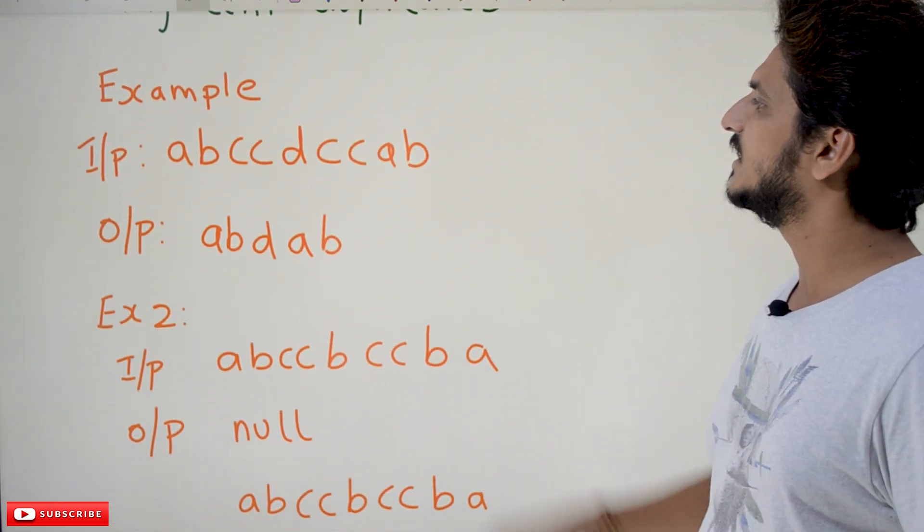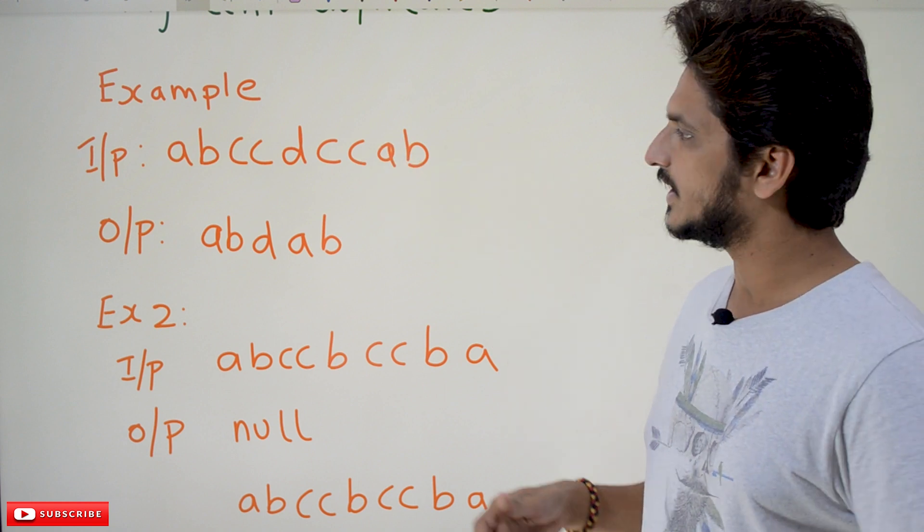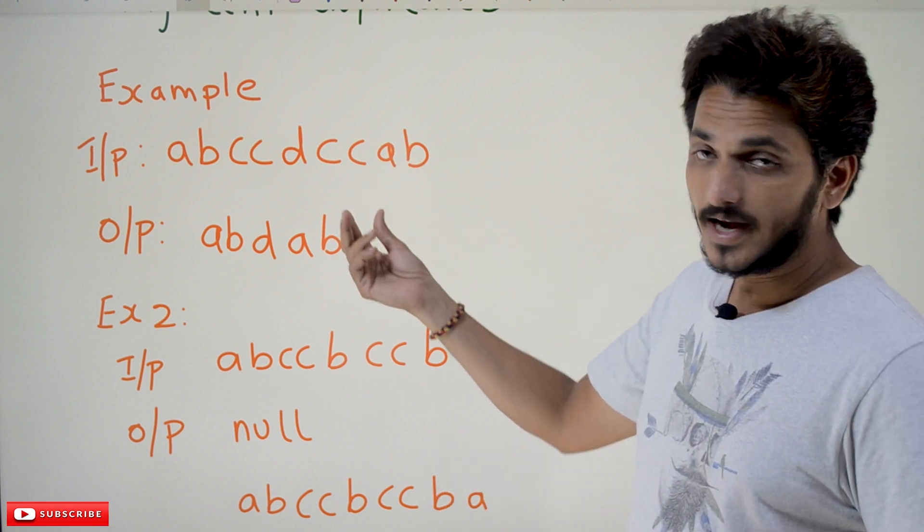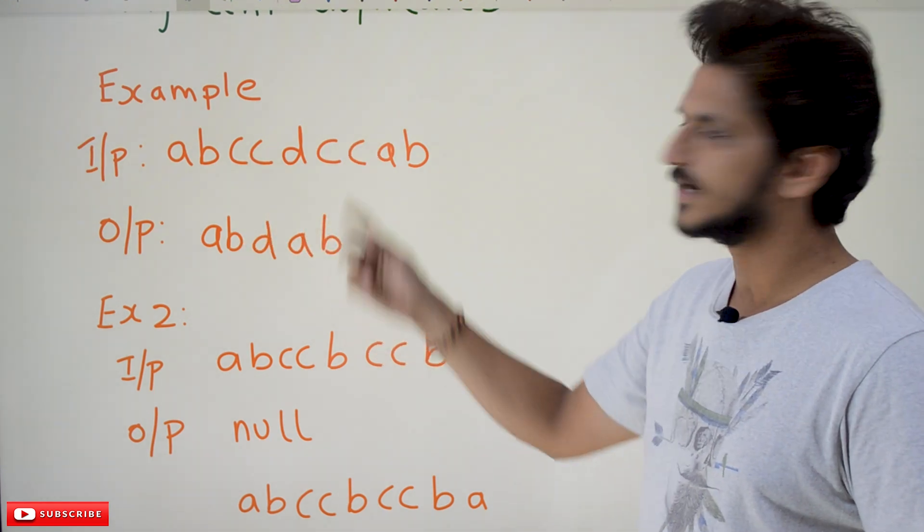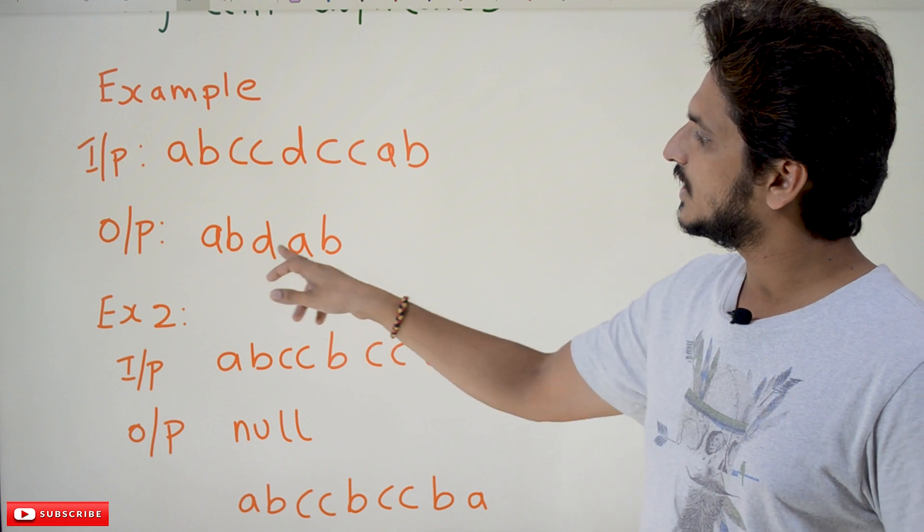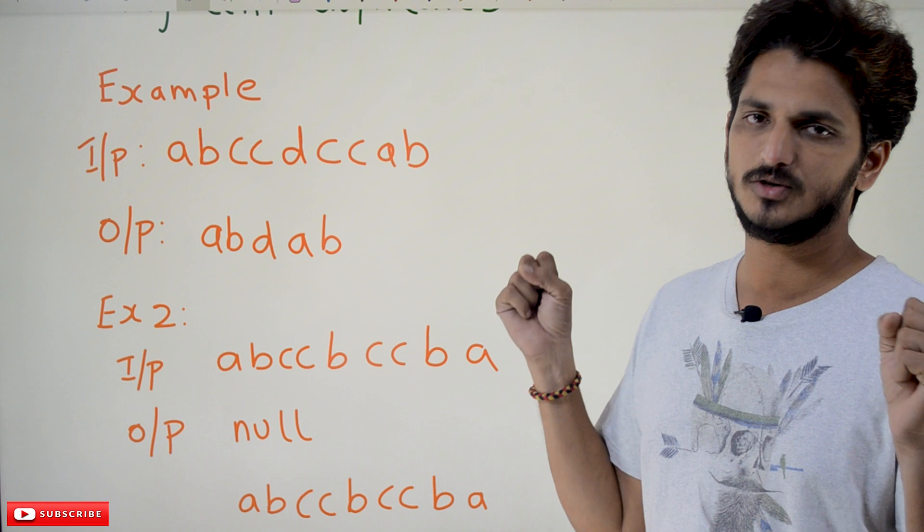Example: abccdccab, this is the input string which they are providing. So in this you have to identify cc, adjacent duplicates, remove it. cc, adjacent duplicates, remove it. So abdab, this is what the output you have to display, remove the adjacent duplicates.